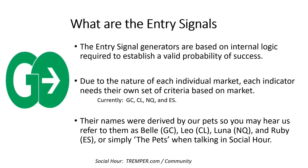Currently we have gold (GC), crude, NASDAQ, and ES. The names are derived from our pets, so you might hear me mention them. We call them Leo, Luna, or Ruby — NASDAQ is Luna, crude is Leo. That makes it a little easier to talk about them.